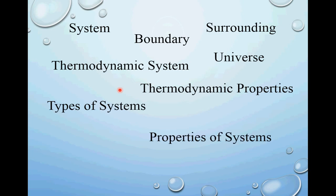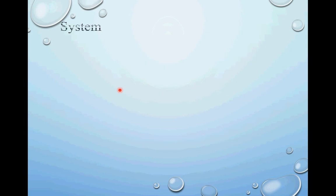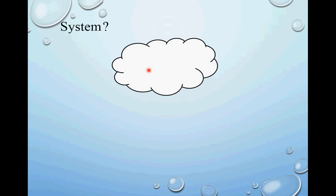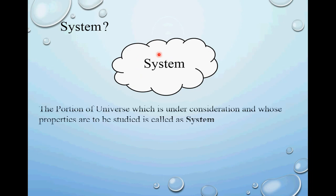Let us start. What is a system? Consider this area enclosed by this barrier — this region which is to be studied is called the system. As per definition, the portion of the universe which is under consideration and whose properties are to be studied is called a system.